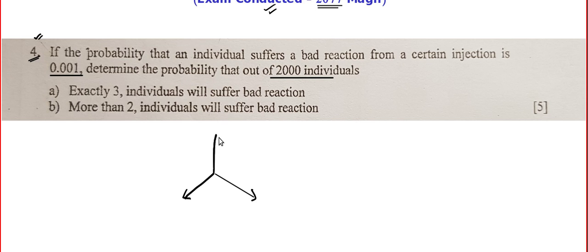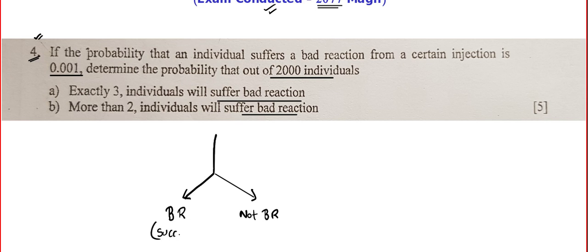Let's say one person took the injection. So that person might have a bad reaction or he might not have a bad reaction. And since we are talking about bad reaction, I am going to call this to be a success. Remember it is just a label — it has nothing to do with real life. No one will call getting a bad reaction a success in real life. And the probability of success is given to be 0.001.